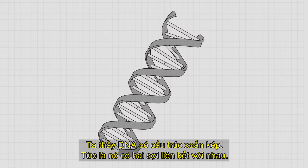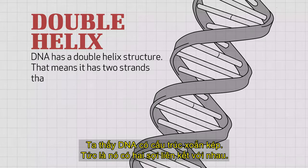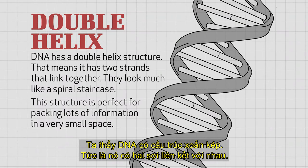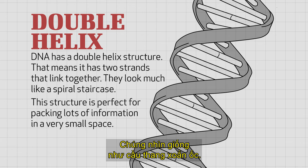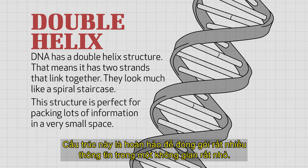As we look at DNA, we see that it has a double helix structure. That means it has two strands that link together and they look much like a spiral staircase. This structure is perfect for packing lots of information in a very small space.